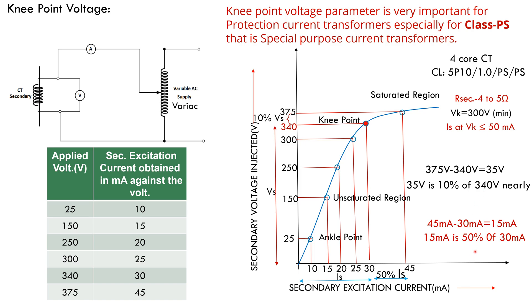This rises from 340 volt to 375 volt. Voltage increases by 10% and current increased from 30 milliamps to 45 milliamps. Current increased by 50%. Hence, the knee point voltage of the given current transformer is 340 volt.